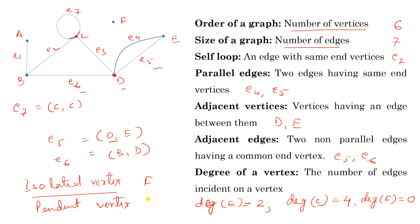A pendant vertex is a vertex whose degree is one. For example, vertex A — the degree of A is one, so A is a pendant vertex. So: isolated vertex means no edge is incident on that vertex, and pendant vertex means exactly one edge is incident on it. These are some basic definitions which we will use further for defining various theorems and finding results. I hope you got the concept of graph and can utilize these concepts in studying theorems.